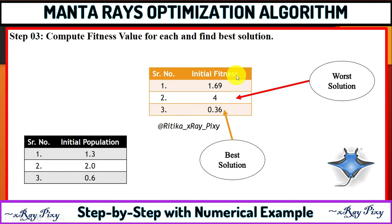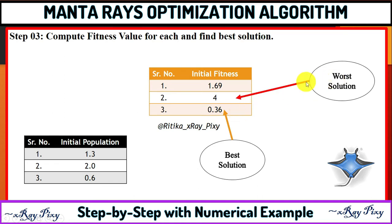Now find out the best solution among all. The best solution means the solution having the minimum fitness value, and the worst solution means the solution having the maximum fitness value.